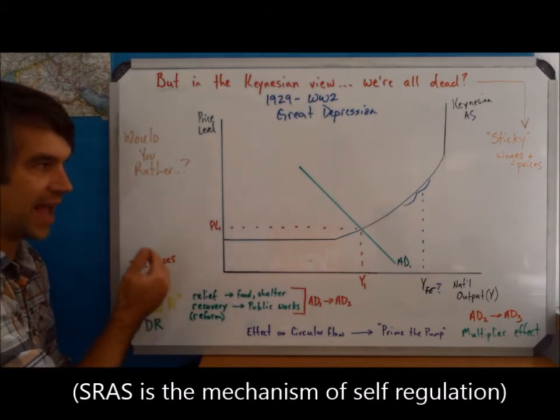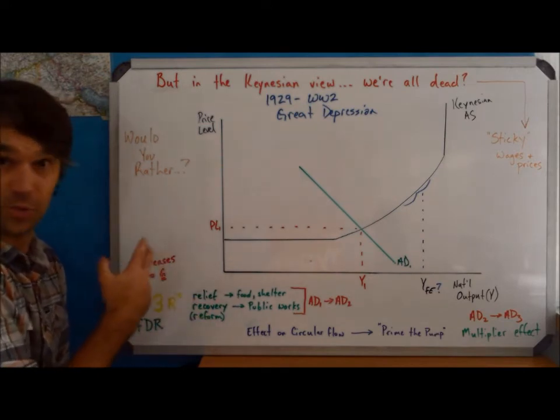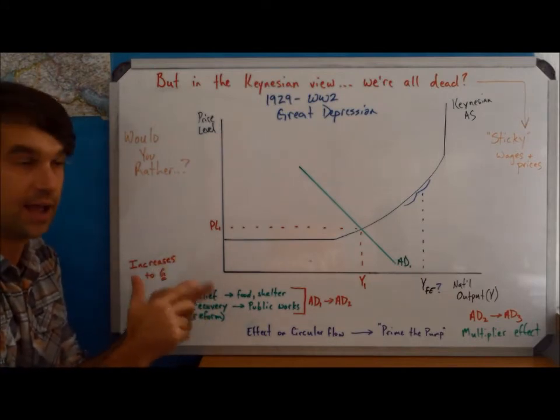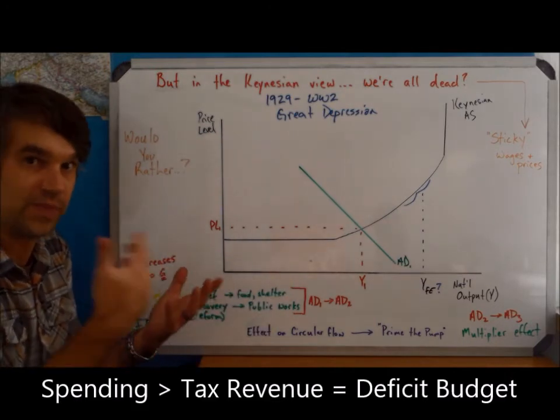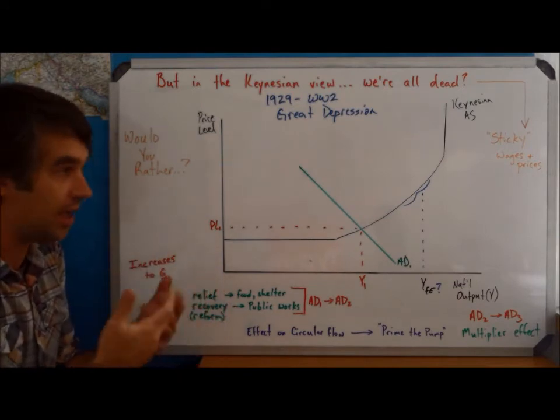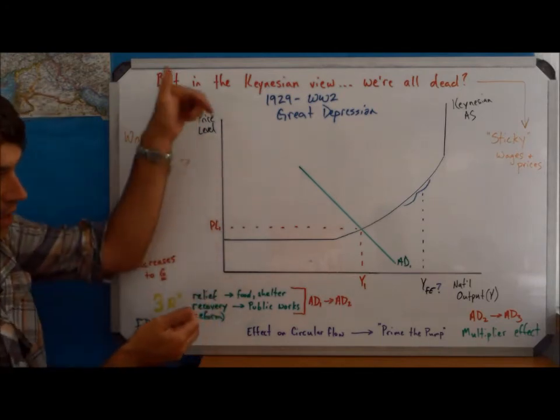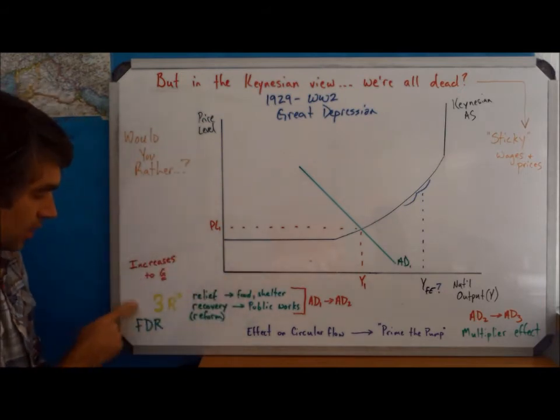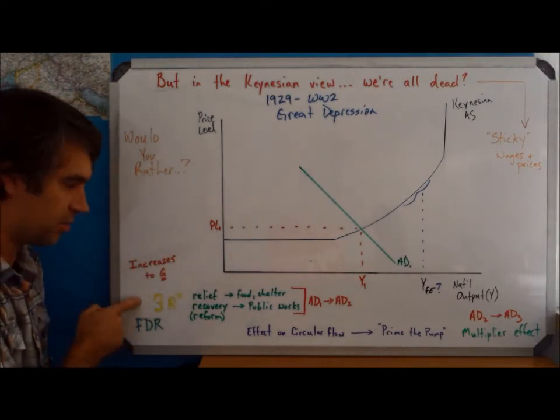Keynes says what has to happen is that aggregate demand has to shift to the right and that's going to happen from increases to G. Keynes wouldn't disagree with what we said on the previous whiteboard. The C is not going to increase on its own. Neither is I. But, he says it's okay for the government to spend more than they bring in in tax revenue. So, that's going to represent increased G and it's going to be, if you think about the circular flow, the tax leaving is going to be smaller than the government spending coming in. So, it's going to expand the circular flow.